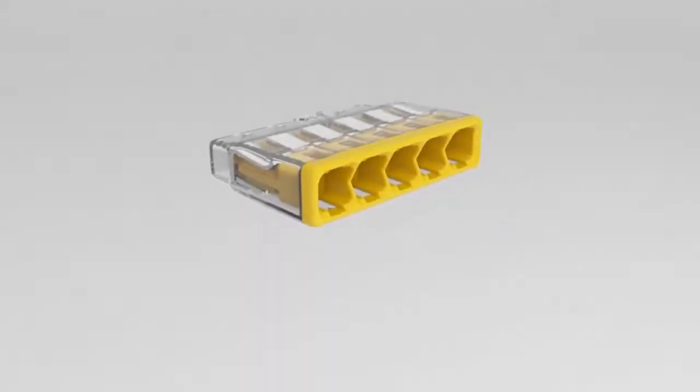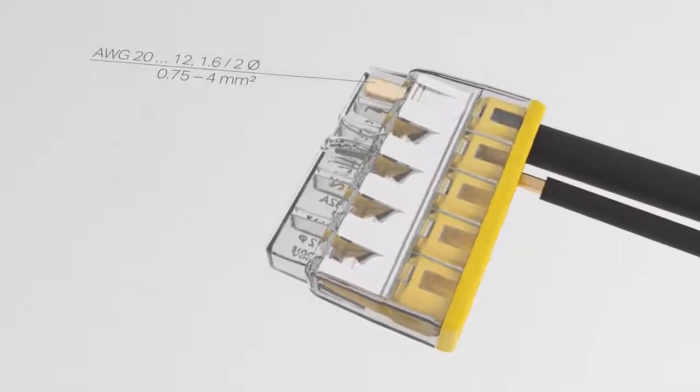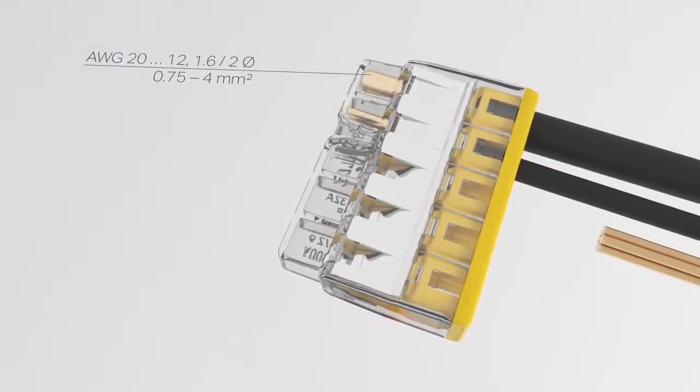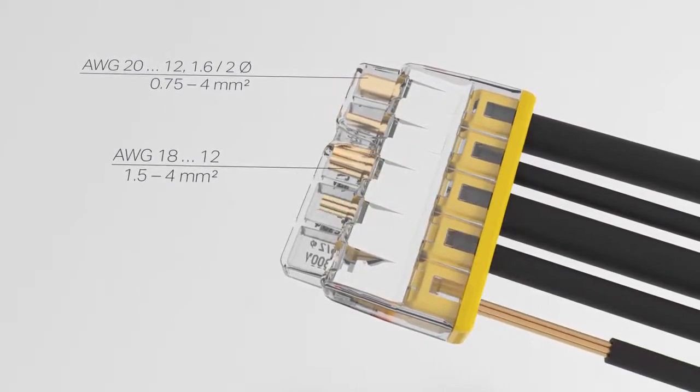Solid conductors with cross sections ranging from 0.75 square millimeters to four square millimeters and stranded conductors from 1.5 square millimeters to four square millimeters can be reliably connected just by pushing them in.